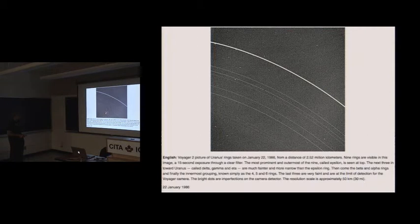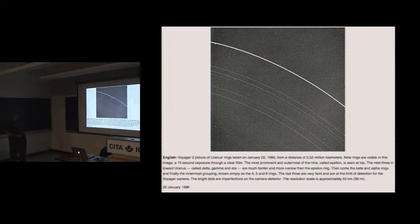These rings are called 3, 5, 4, alpha, beta, gamma, and epsilon. Epsilon of course is the largest one. Epsilon has a width that varies by about a factor of five — it's an elliptical ring with an ellipticity of about one percent. At periapsis its width is about 20 kilometers, and at apoapsis its width is about 100 kilometers. The ring shape is only very slowly precessing, at about 1.4 degrees per day, while the particles are going around in something less than a day.